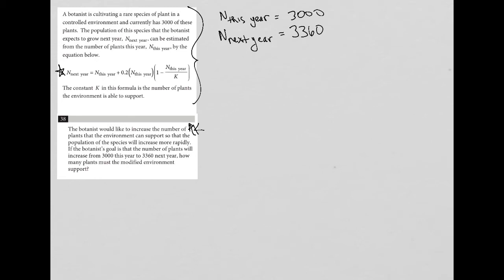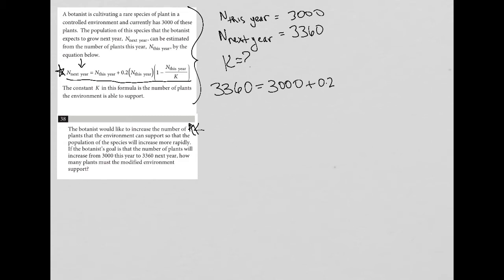How many plants must the modified environment support? Basically we're asking: what is K under those conditions? I'm going to go back to this equation, fill everything in except for K, and then solve for K. We know that n next year is 3,360, so that equals n this year — which is 3,000 — plus 0.2 times 3,000, times 1 minus 3,000 over K, which is what we're trying to find.